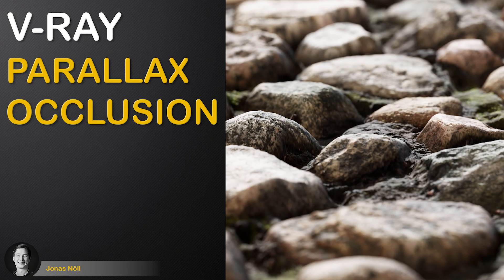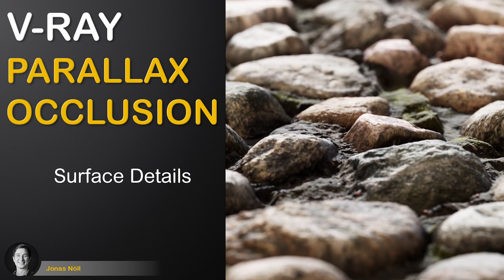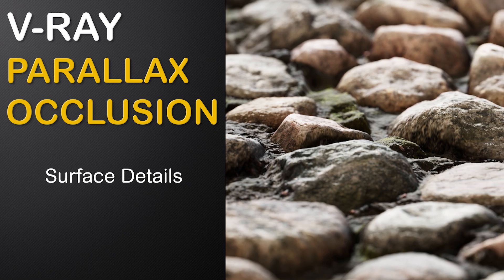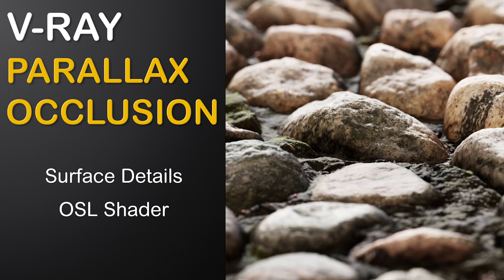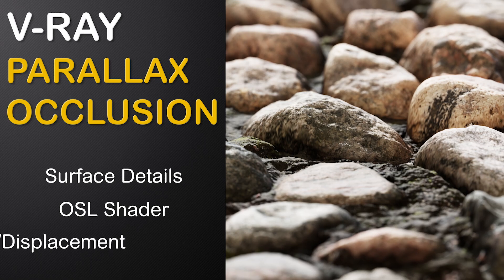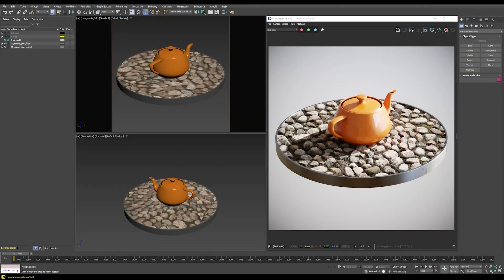In this tutorial we will use parallax occlusion to add realistic surface details. For this we will build a custom OSL shader and then compare it to existing methods such as normal or displacement mapping. Parallax occlusion tries to mimic a displacement map without actually subdividing and displacing the geometry itself — everything is just done through the shader.